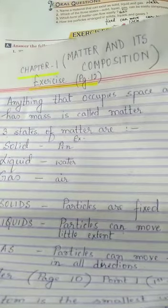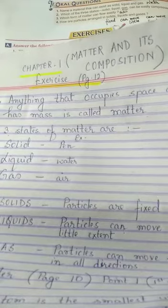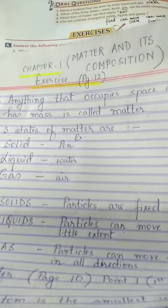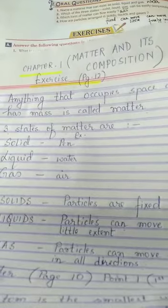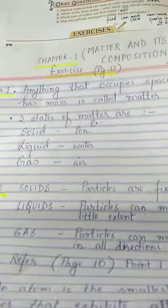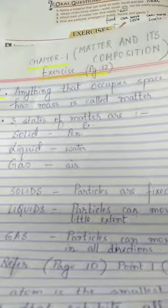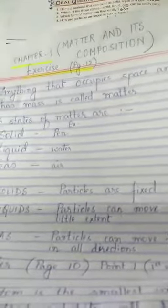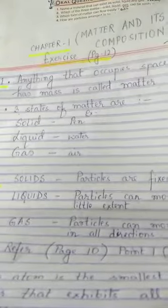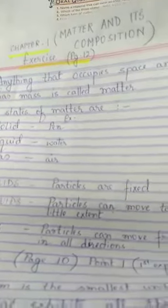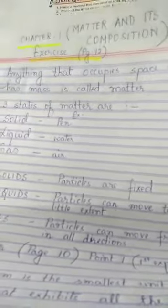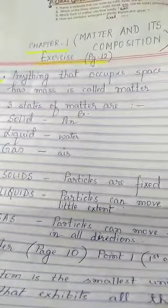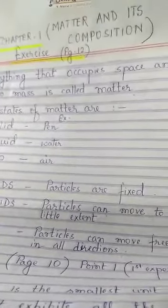Question number 2. On the basis of position of particles, how will you differentiate between the three states of matter? So, the second answer. Solids. In solids, the particles are fixed. In liquids, particles can move to a little extent. Whereas, in gas, particles can move freely in all directions.